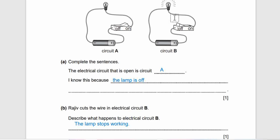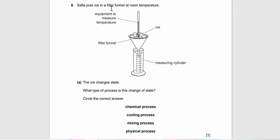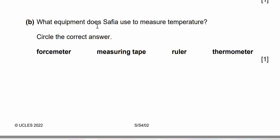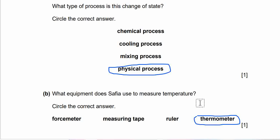Question 6: Sophia puts ice in a filter funnel at room temperature. Equipment to measure temperature here and measuring cylinder. The ice changes state. What type of process is this change of state? Circle the right answer: chemical process, cooling process, mixing process, or physical process? Well, this is a melting process. Let's check it out. It's a physical process. Melting is a physical process - it only changes state, it doesn't create anything new. For chemical, it should be creating new substance. Question 6b: What equipment does Sophia use to measure temperature? Temperature relates to thermometer.